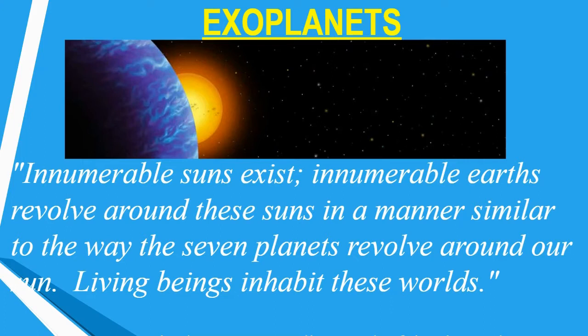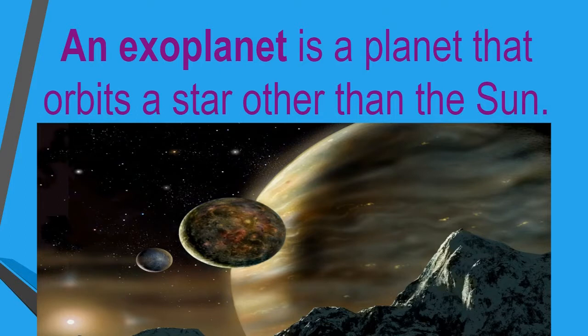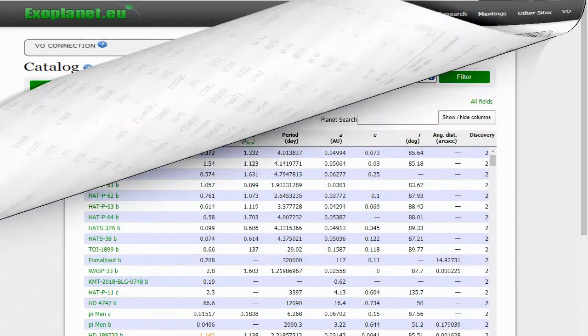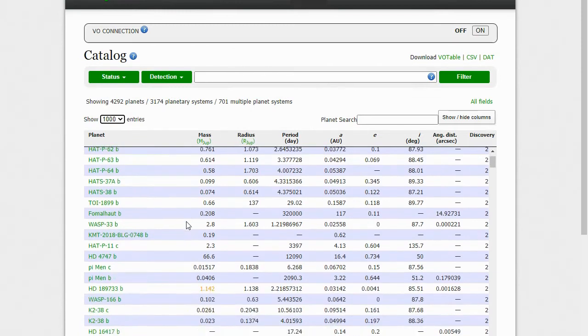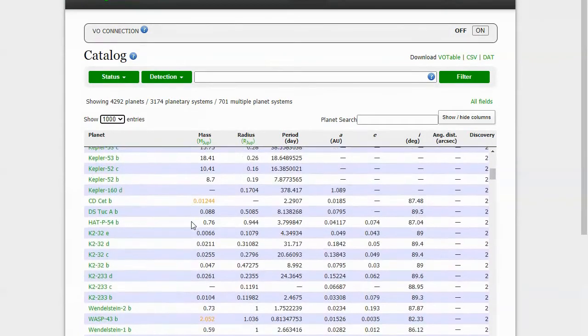In 1992, the first exoplanet was discovered. Since then, we've discovered over 4,000 exoplanets. We've used things like spacecraft with telescopes and telescopes here on Earth to find these exoplanets. Since we started looking — maybe in earnest in the last 10 to 15 years — we've found thousands of planets that are outside our solar system. Here's a list of those exoplanets, and you can see that list goes on and on for quite some time.